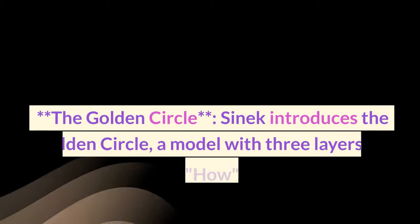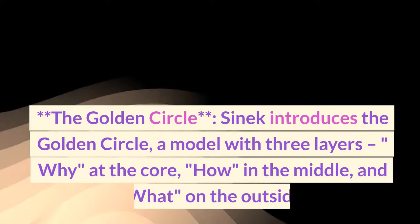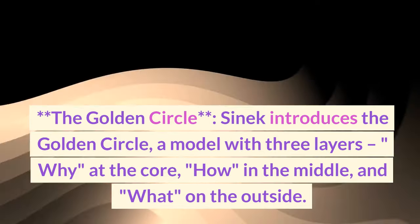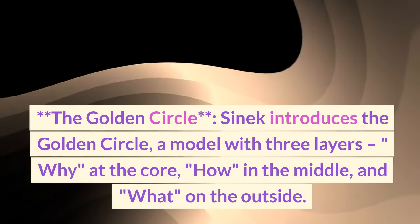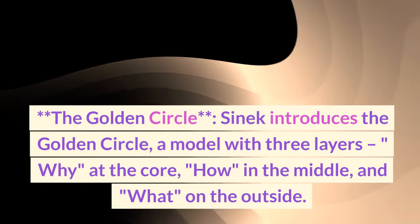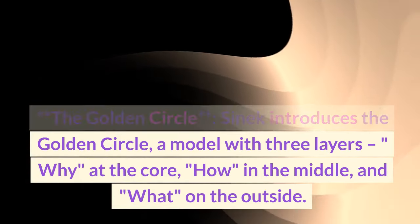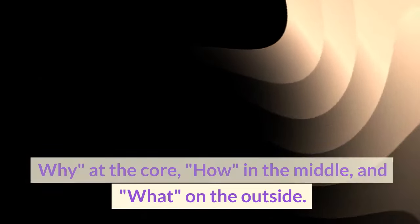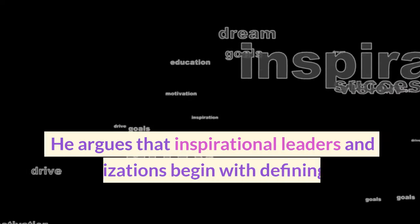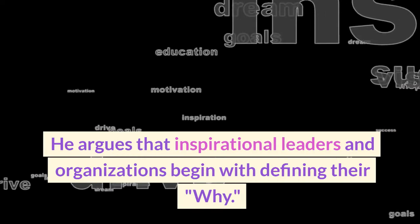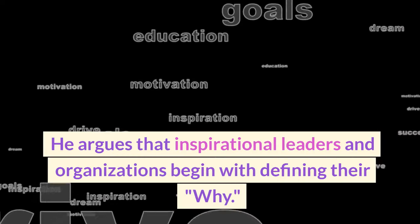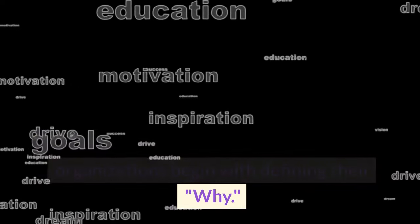The Golden Circle: Sinek introduces the Golden Circle, a model with three layers — why at the core, how in the middle, and what on the outside. He argues that inspirational leaders and organizations begin with defining their why.